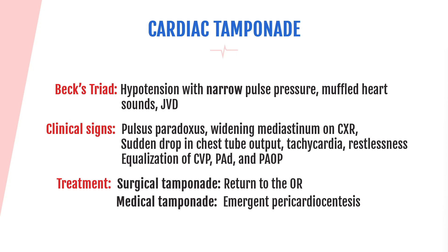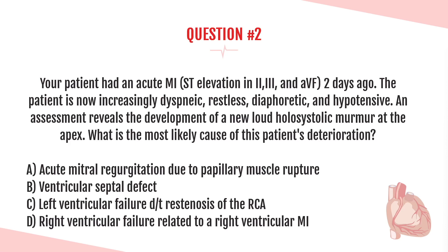When it comes to treatment, most patients with cardiac tamponade on the CCRN will be post-CABG. If that's the case, returning to the OR to drain the accumulated pericardial fluid is the immediate intervention. You can give fluids and blood products and start pressors, but the patient will be hemodynamically unstable and will need to return to the OR. If this is a medical cardiac tamponade, emergent pericardiocentesis is the indicated treatment.